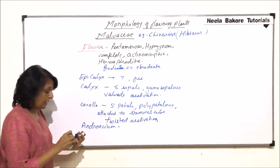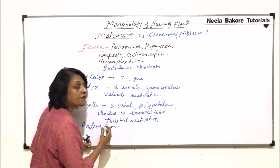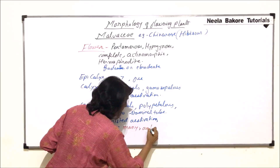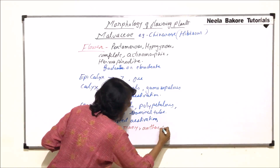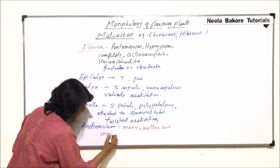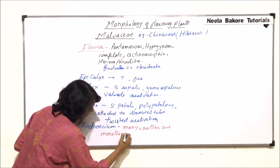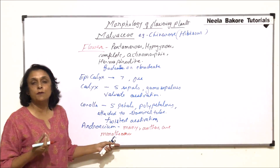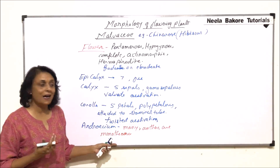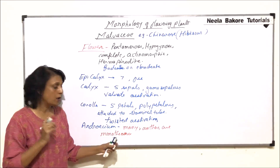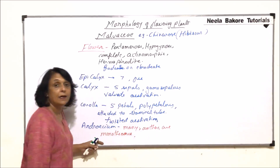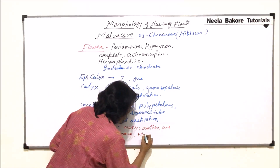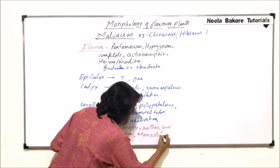Coming to the androecium: the number of stamens is very high, so we write 'many.' The anthers are monothecous, meaning they have only one lobe — normally there are two types of anthers, monothecous and dithecous, and here it is one-lobed or monothecous. A monadelphous condition is seen here, meaning all the filaments are fused into one bundle.